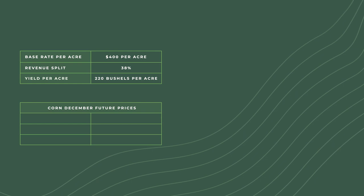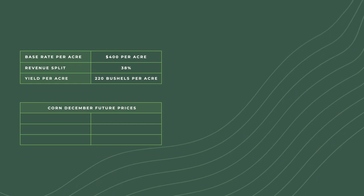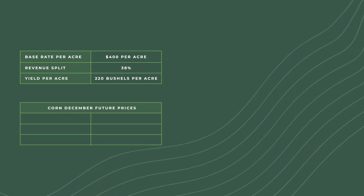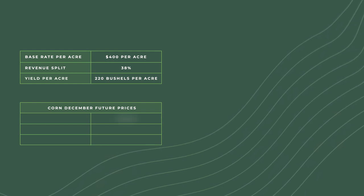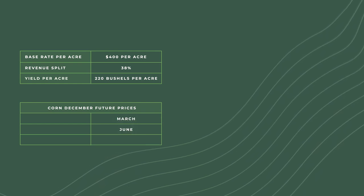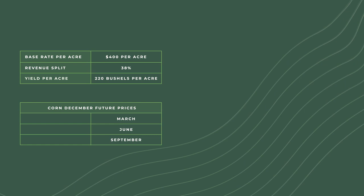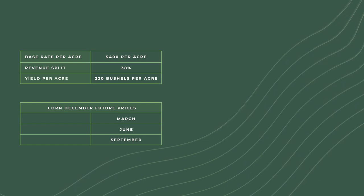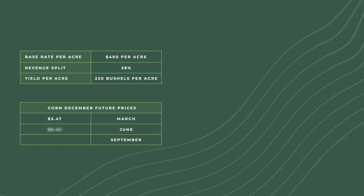The corn futures price at the local grain elevator was logged in March, June, and September at per bushel prices of $5.47, $6.52, and $6.02, the simple average of which is $6.00 per bushel.